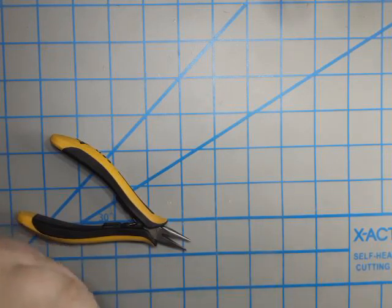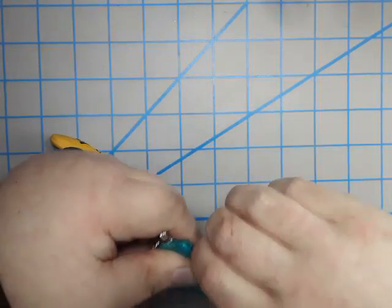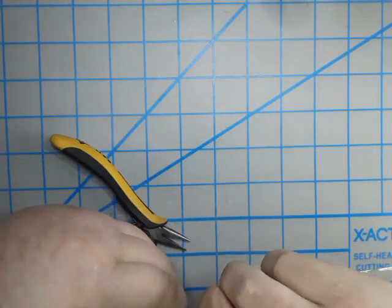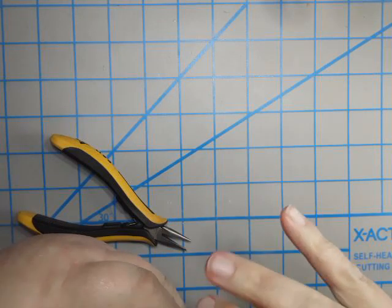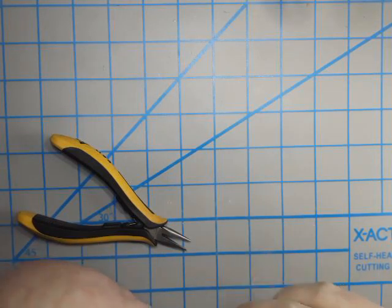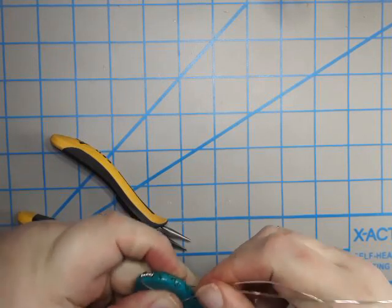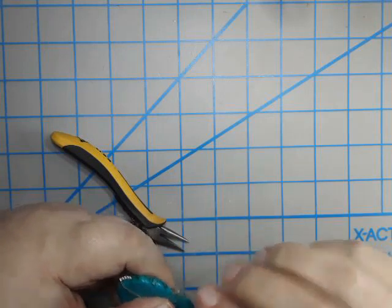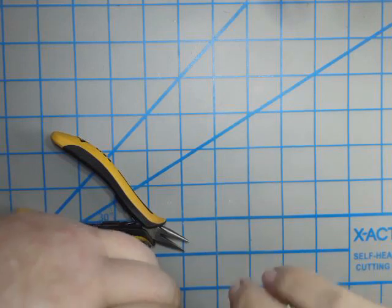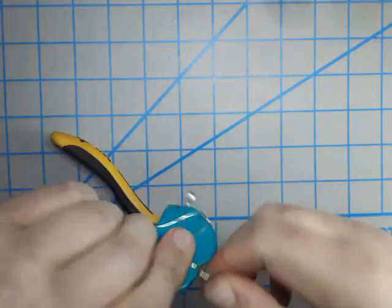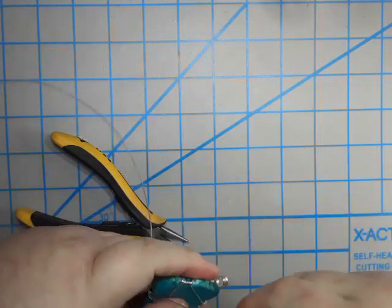Now we're going to the other side - twist two, three, push it down. Go straight across two, three, four, and then bring the last wire.